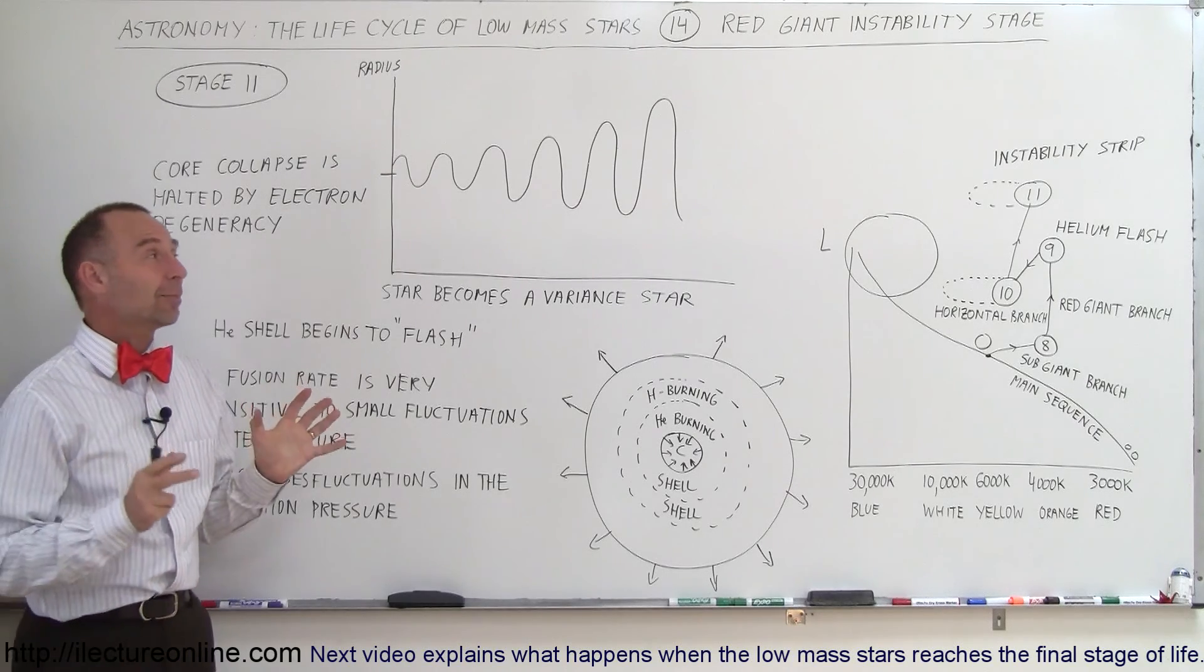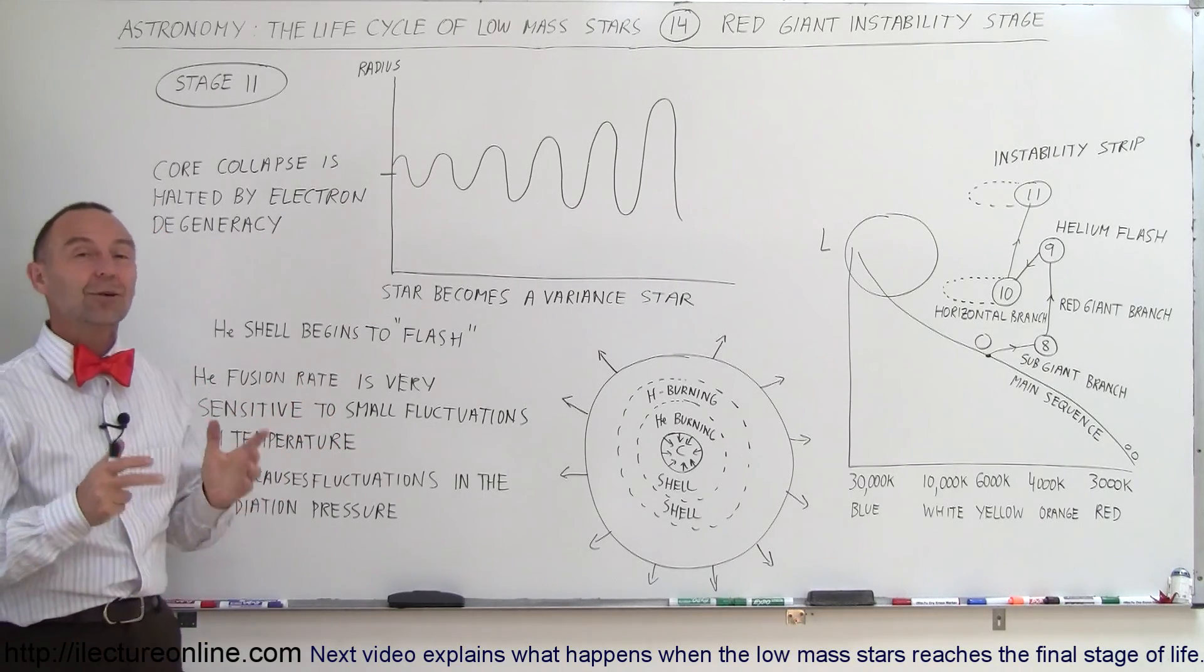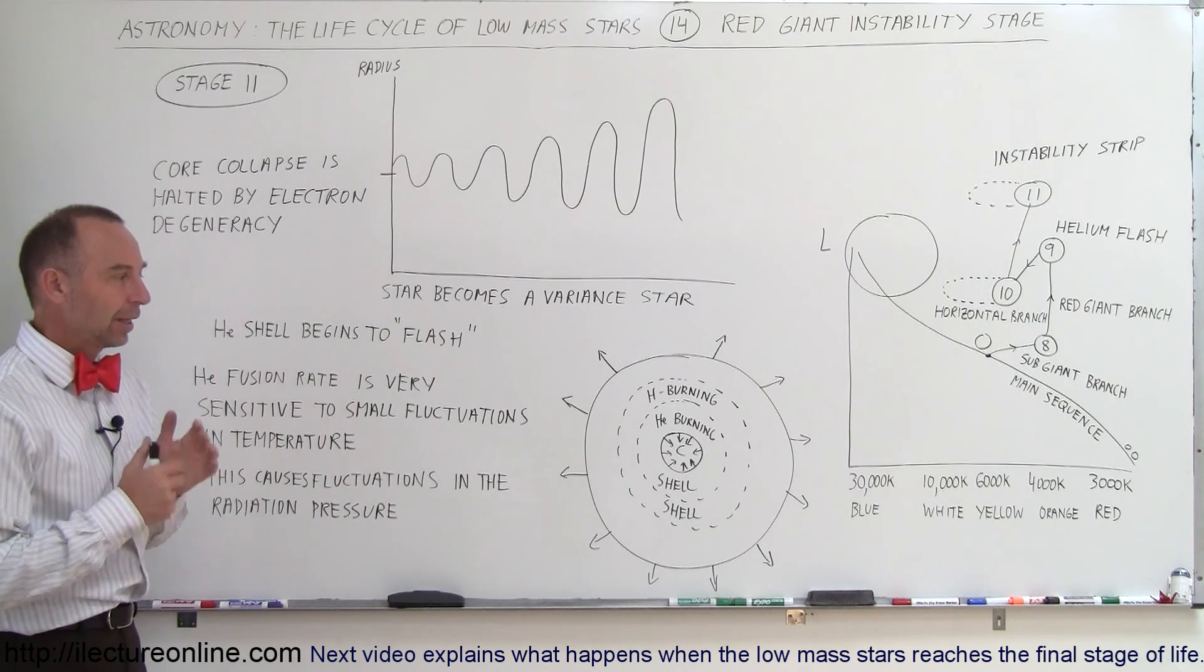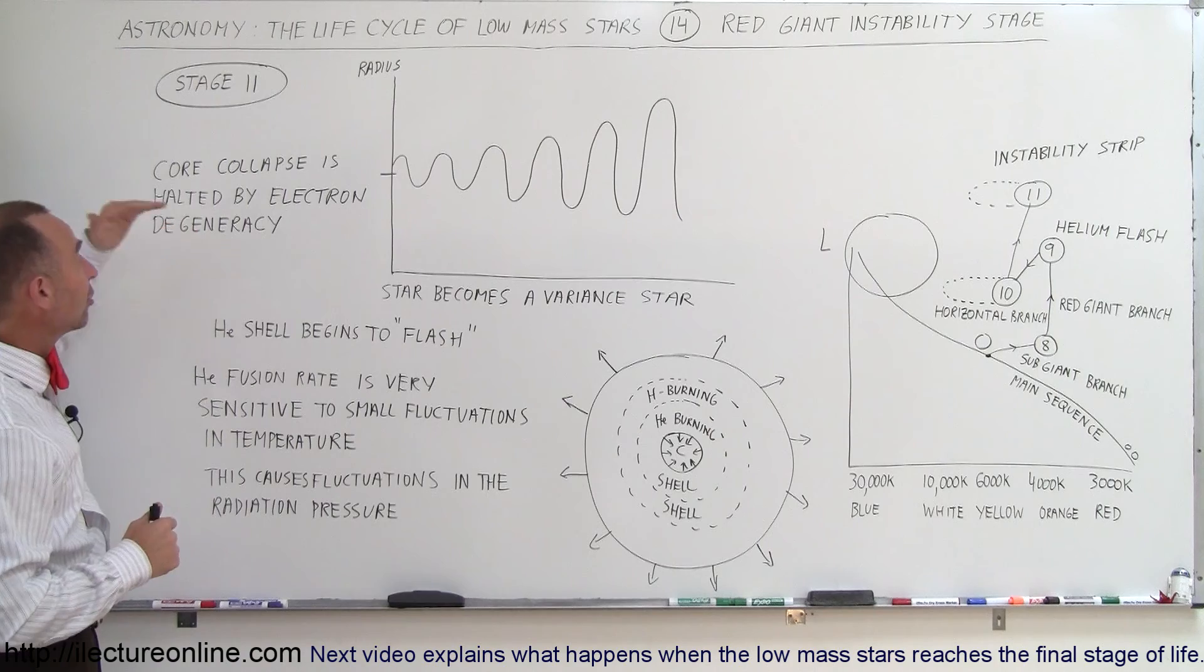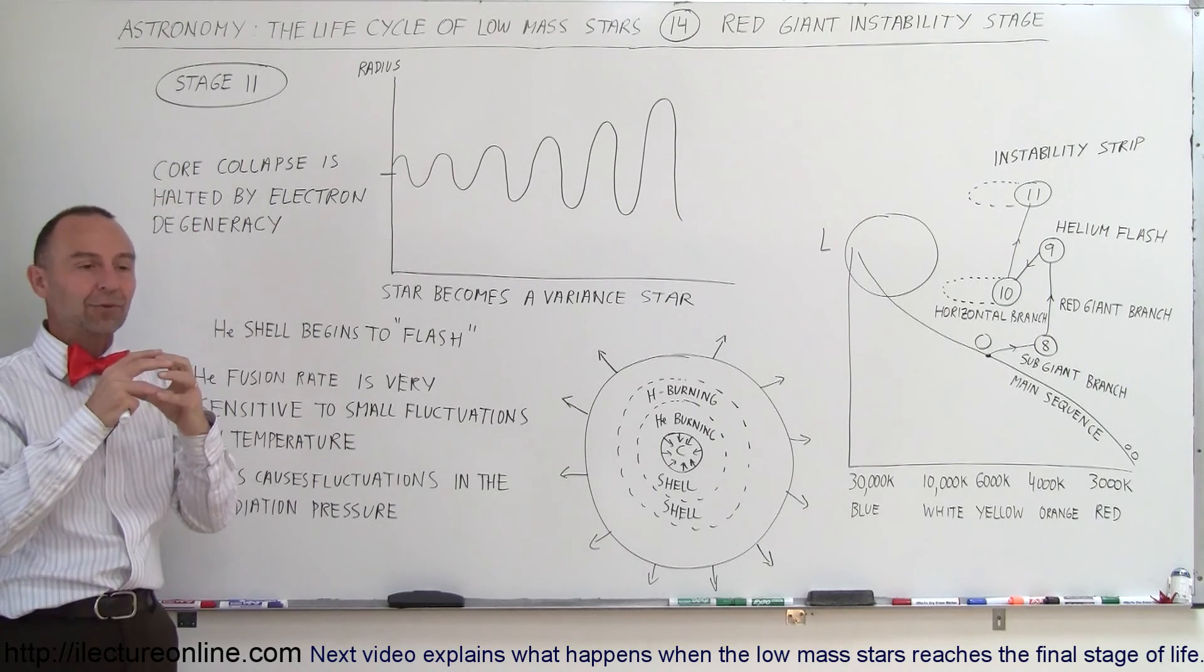Welcome to ElectronLine. Now we're going to talk about a very special phase in the red giant's life. As the core continues to collapse, eventually the electron degeneracy will hold the core collapse.